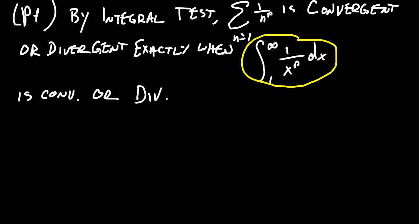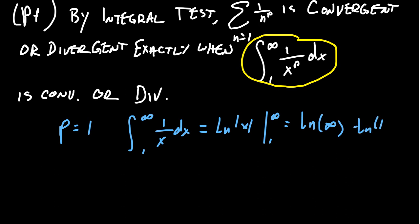If p equals 1, the integral from 1 to infinity of 1 over x dx has antiderivative natural log of x from 1 to infinity. This gives natural log of infinity minus natural log of 1. Since natural log of 1 equals 0 and natural log of infinity is infinity, we get infinity, so this integral is divergent. When p equals 1, the p-series will be divergent.